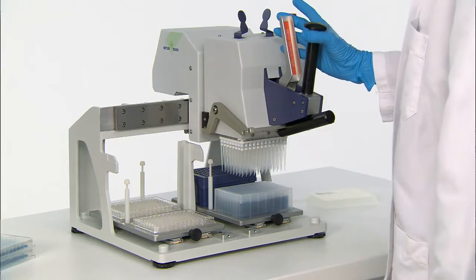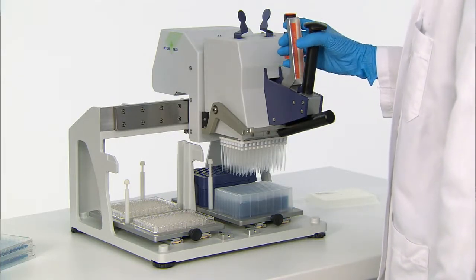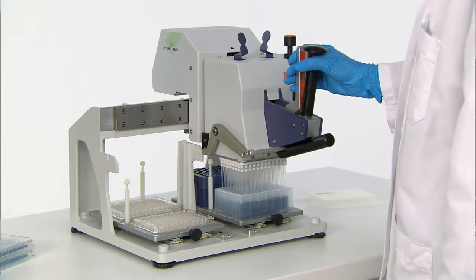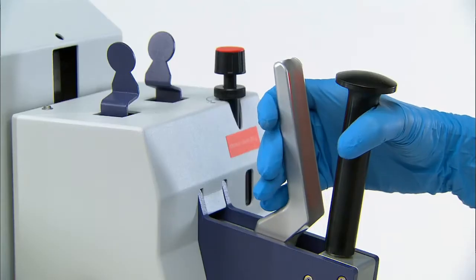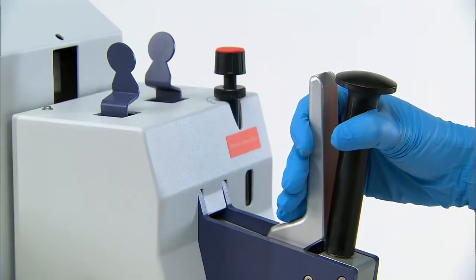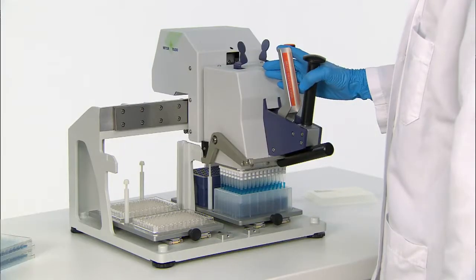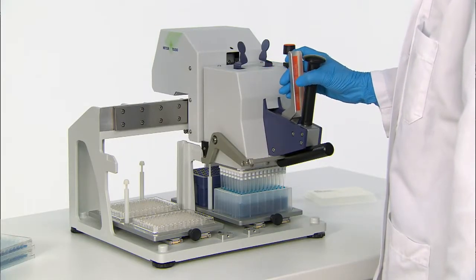Once the tips are loaded, slide the right platform back so that the tips are over the liquid sample. Squeeze the pipetting lever and lower the tips into the liquid. Slowly release and squeeze the handle twice in order to pre-rinse the inside of the tips for best accuracy and reproducibility.